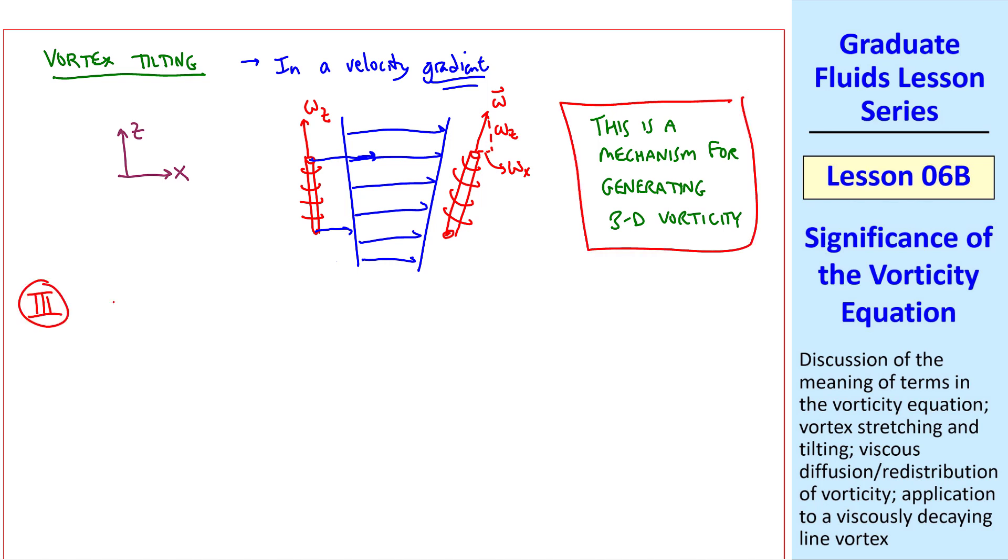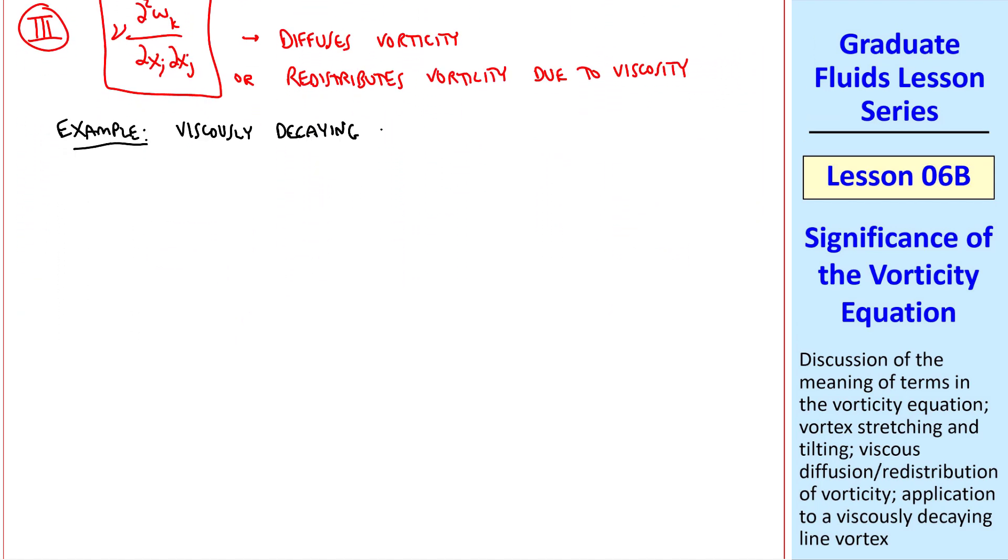Finally, the viscous diffusion term, which I rewrote here, diffuses vorticity or redistributes vorticity due to viscosity. For example, consider a viscously decaying line vortex. We start at time zero with a line vortex, which is a concentrated vorticity of infinite amount at the origin. If we plot u theta, the tangential velocity component, it's infinite at the origin, and then decays as 1 over r. In fact, we know that u theta is gamma over 2 pi r.